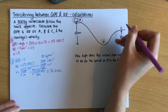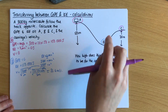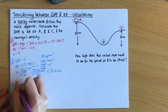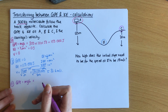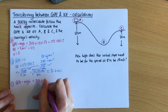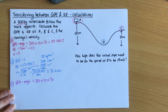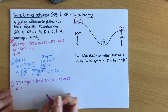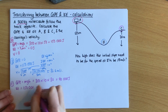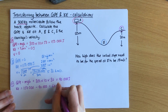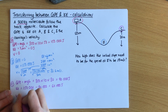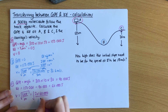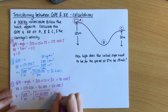Part C is slightly harder because it's not at the top or at the bottom, so it will have both GPE and KE. At C, first I work out GPE: GPE equals mgh = 300 times 10 times 30 equals 90,000 joules. I can then work out KE, because it must equal the total energy 150,000 minus the GPE: KE equals 60,000 joules. Using v equals the square root of 2KE over m: the square root of 2 times 60,000 divided by 300 comes out as 20 metres per second.